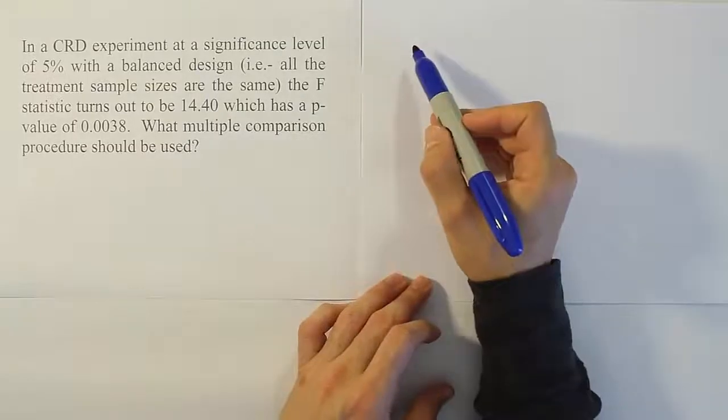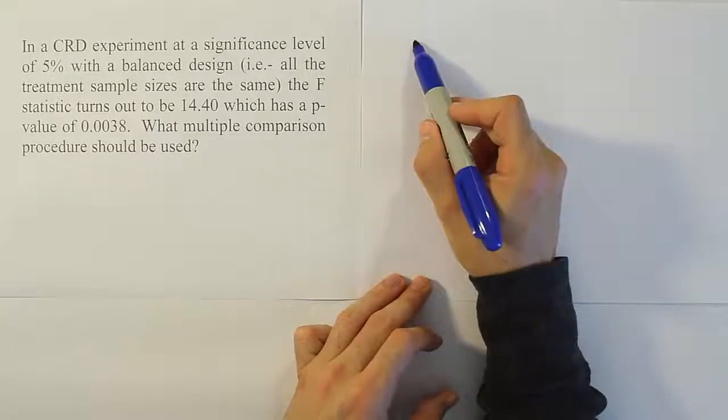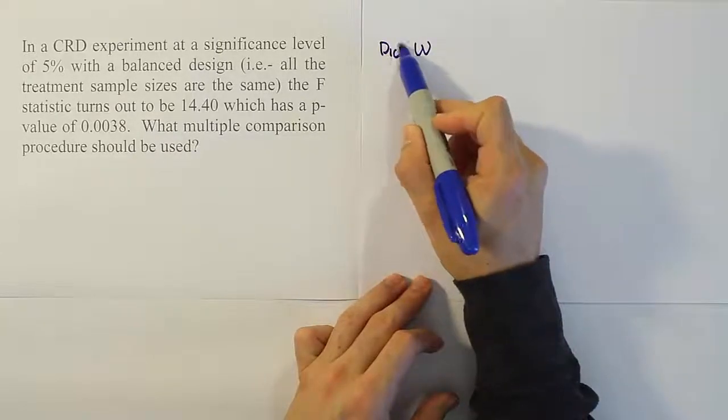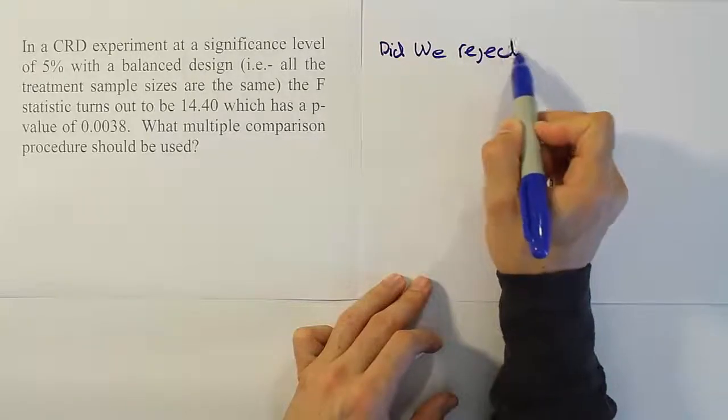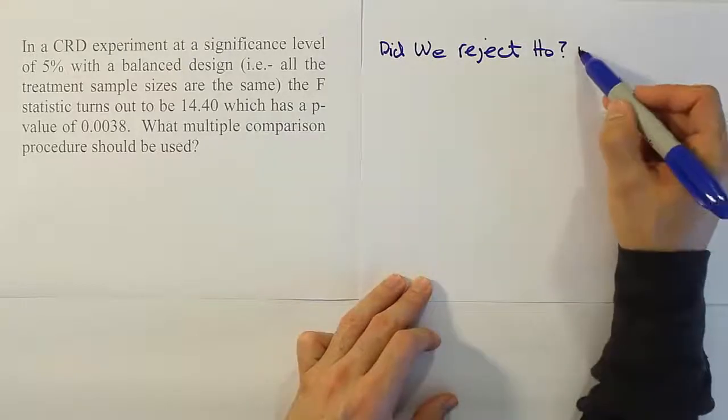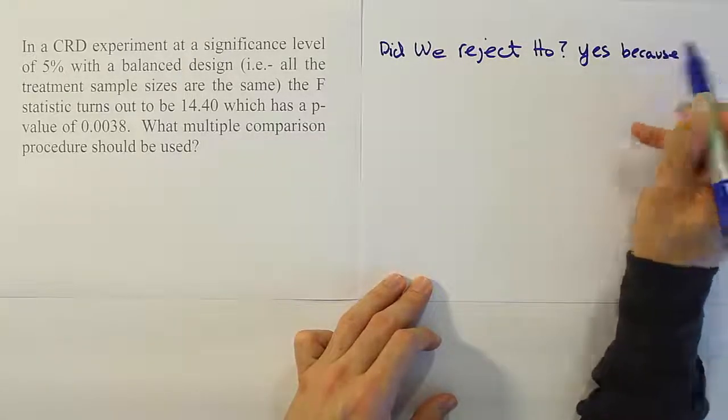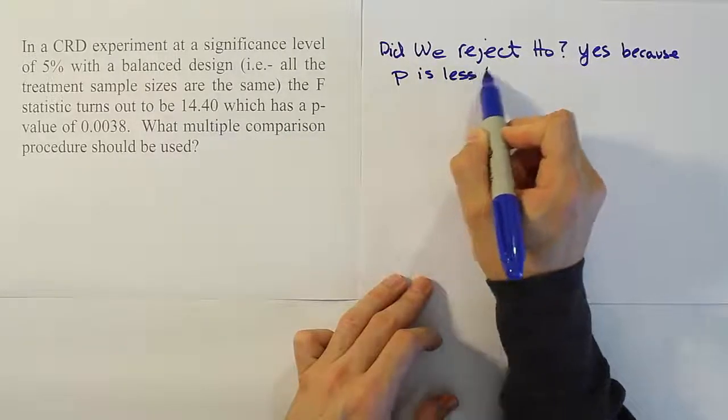In order to check if we rejected the null hypothesis, we want to compare the p-value and alpha. So the first thing you're going to ask yourself is, did we reject H0? And the answer here is yes, because p is less than alpha.